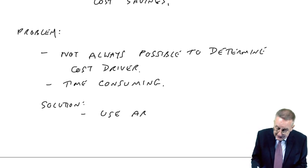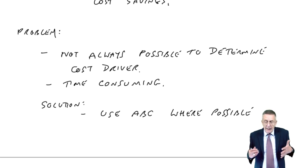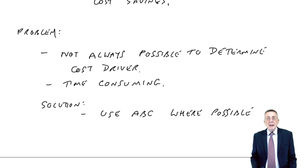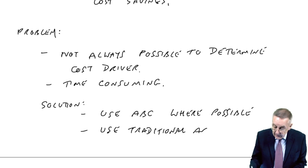So, use ABC where possible. But any other overheads, like my example of rent, where we can't decide on a cost driver, it's just not feasible, then perhaps on the remainder, use traditional absorption on the remaining overheads.